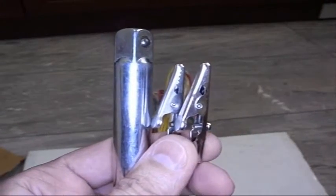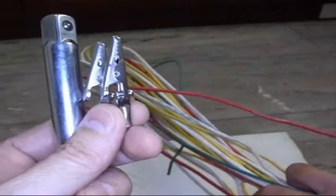To make one of these third hand wire holders, you need a couple of clips, a heavy piece of wire, some scrap wire, and something to wrap it around.